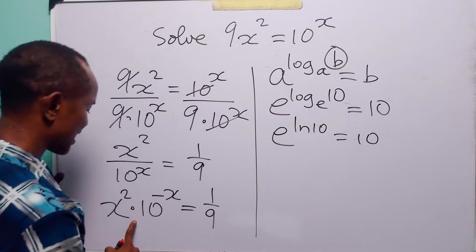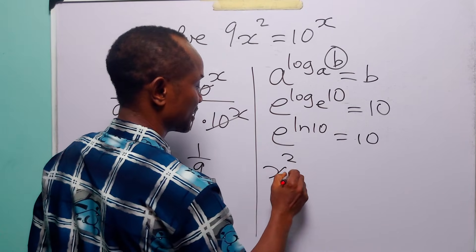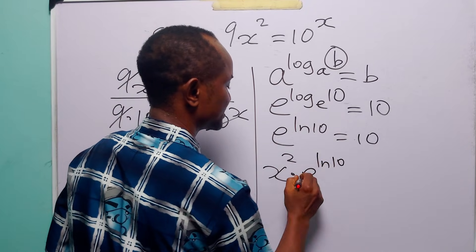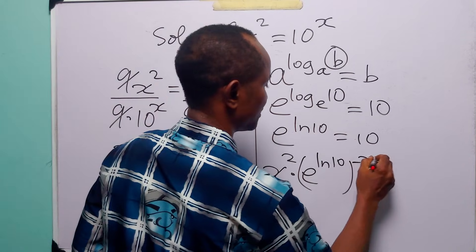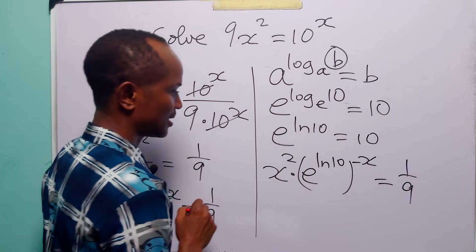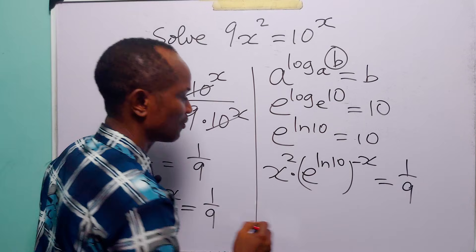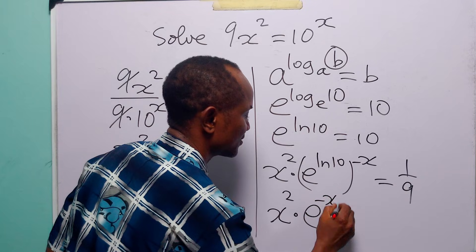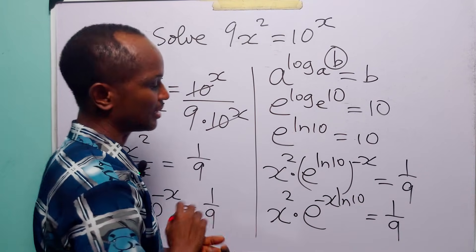That simply means we can write the left-hand side as x squared multiplied by — where 10 is now e to the power ln 10 — and 10 has a power of minus x. This is equal to 1 over 9. To get rid of the brackets, we multiply the two powers. When we do that, we have x squared times e to the power minus x ln 10 is equal to 1 over 9.